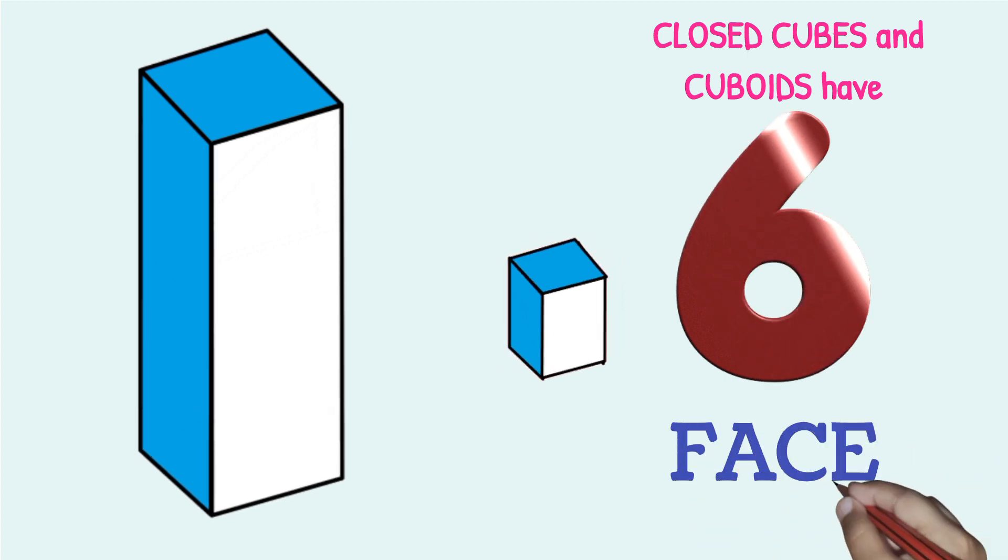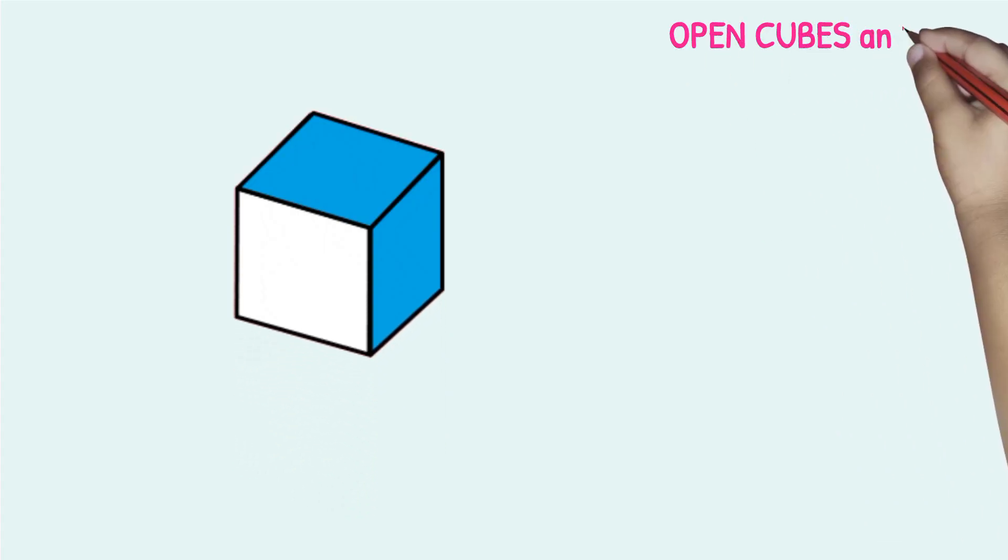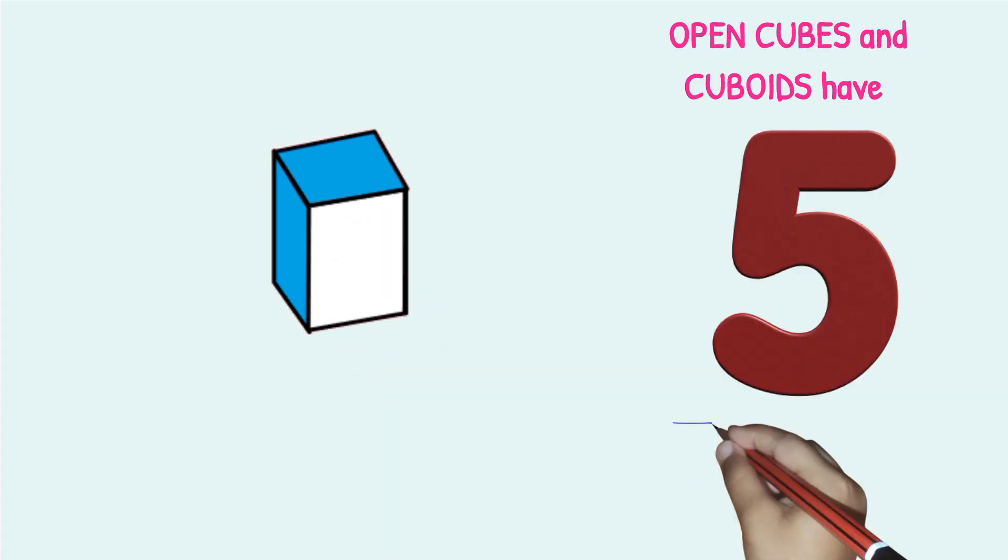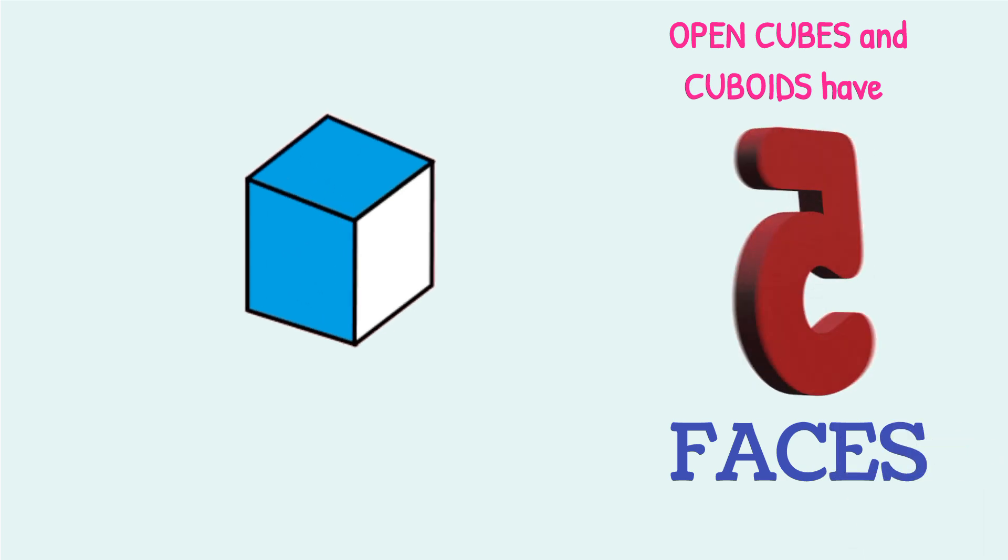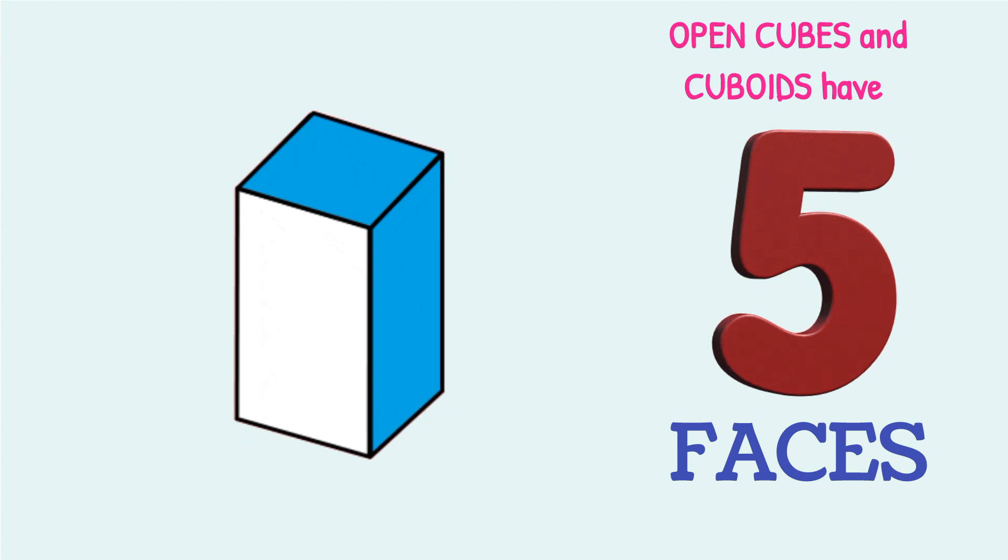Closed cubes and cuboids, we have said we have 6 faces. You can see these cubes here and cuboids. And open cubes and cuboids have 5 faces because open is removing one surface, removing one face.